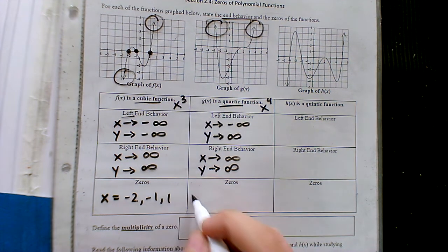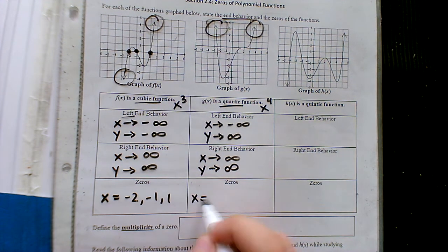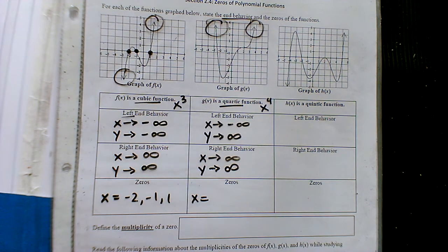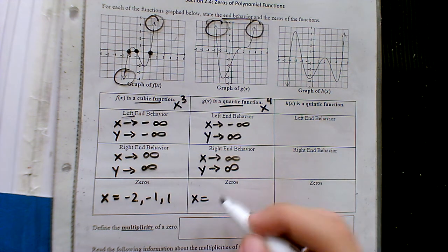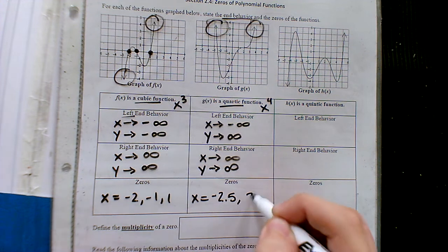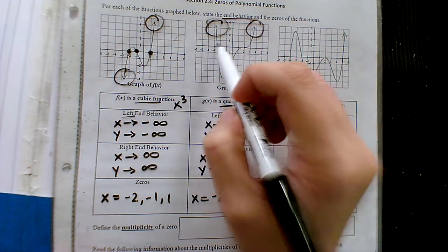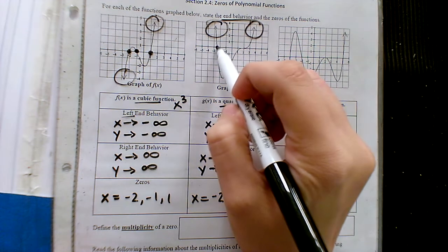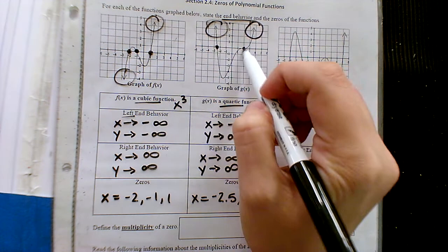What about the zeros for this graph? Negative two and a half and positive two — negative two and a half looks good.